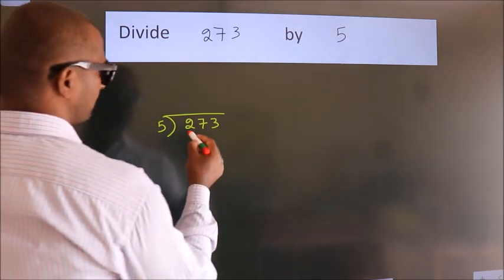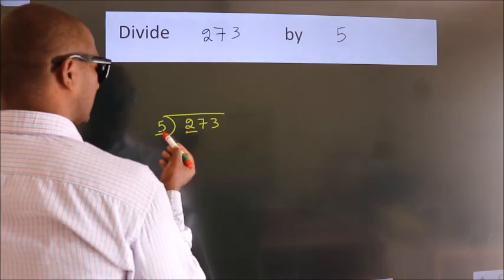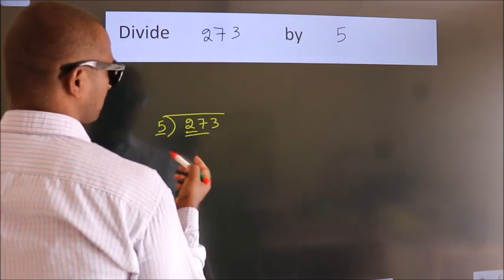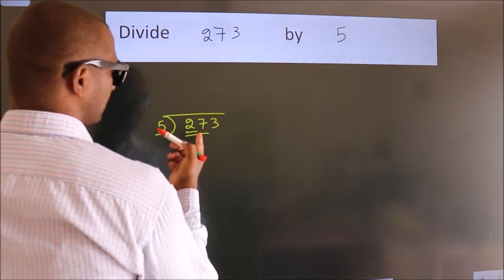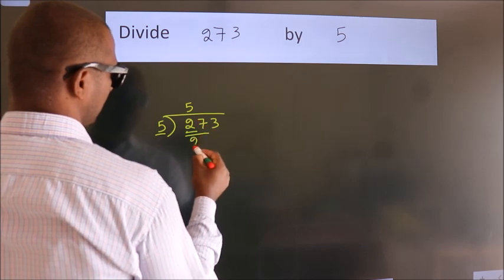Next, here we have 2, here 5. 2 is smaller than 5, so we should take 2 numbers: 27. A number close to 27 in the 5 times table is 5 times 5, which is 25.